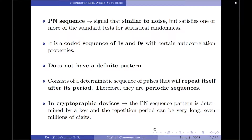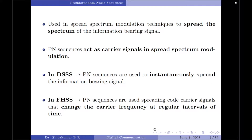In cryptographic devices the PN sequence pattern is determined by a key and the repetition period can be very long, even millions of digits. PN sequences are used in spread spectrum modulation techniques to spread the spectrum of the information-bearing signal. PN sequences act as carrier signals in spread spectrum modulation.